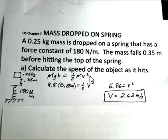This is the instant it hits the spring before the spring affects the speed of the object. So the mass cancels on both sides, and we have 9.8 times the 0.35 meters of height equals 0.5 V squared. You should pause the video and check this on your calculator. I came up with 2.62 meters per second for the speed of the object.